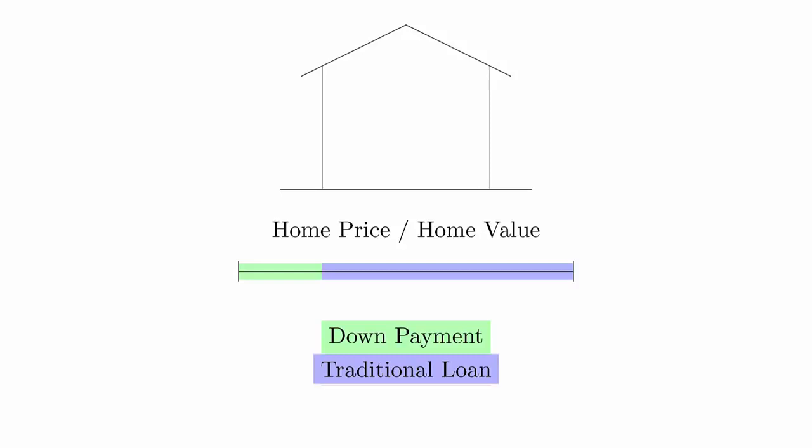Conventionally, the recommended size of the down payment has been at least 20% of the value of the house. However, in recent decades, that number has dropped quite a bit in some perspectives. But low down payments are a risk to banks because owners are less financially invested. Just before the recession, people were purchasing homes with no money down, and that contributed to the collapse of the housing market.